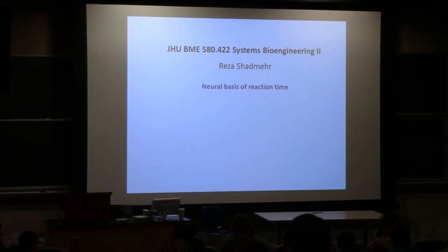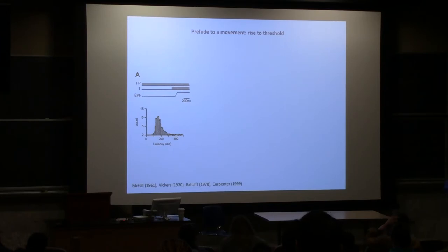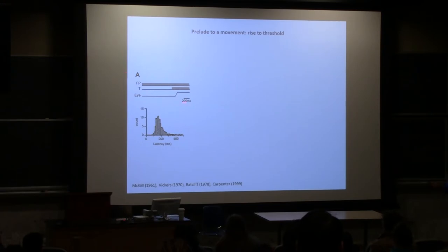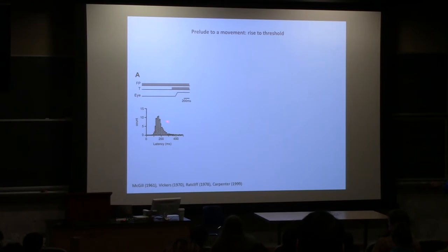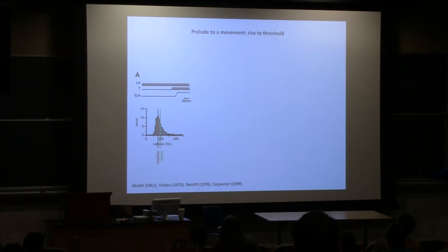So this is a reaction time diagram. On the upper part, there's a fixation point — you're looking at a dot on the screen. As a function of time, the fixation point is on, then at some point the target appears. The fixation point stays on, the target appears, and you make a saccade to it. We're simply looking at the time from when the target appears to when the saccade is made, shown in the distribution. You can see there's a median and a mean, and the distribution is skewed with a tail.